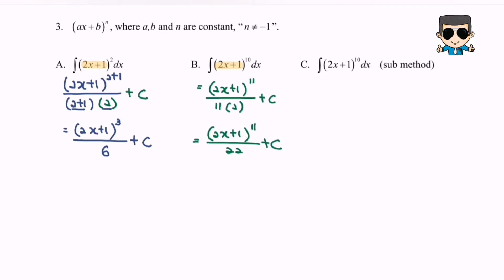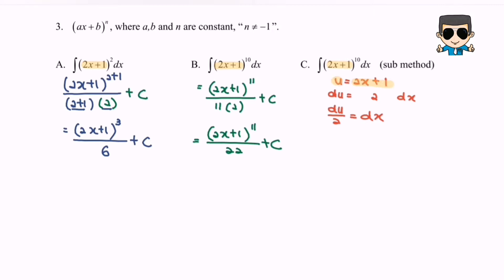We can also use the substitution method to solve this. Let u equal 2x plus 1. Differentiate with respect to x: du/dx equals 2, so du over 2 equals dx. Now substitute: 2x plus 1 becomes u, and dx becomes du over 2. So we integrate u to the power of 10 times du over 2.